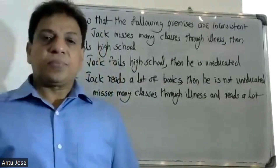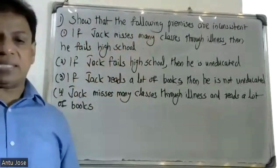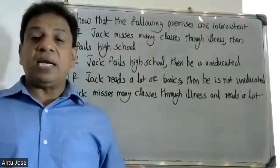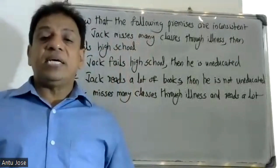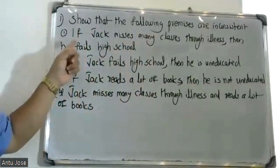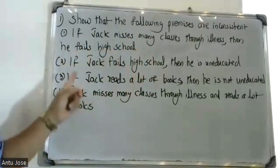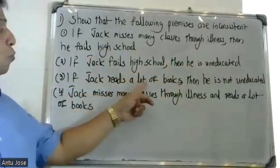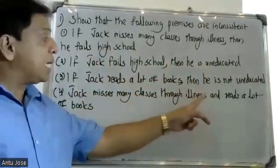Good morning friends. Show that the following premises are inconsistent: If Jack misses many classes through illness, then he fails high school. If Jack fails high school, then he is uneducated. If Jack reads a lot of books, then he is not uneducated. Jack misses many classes through illness and reads a lot of books.